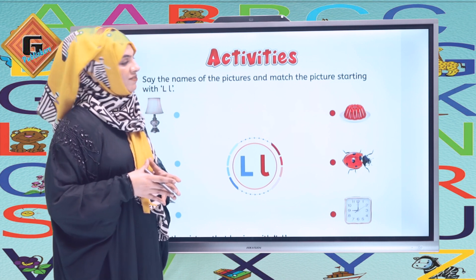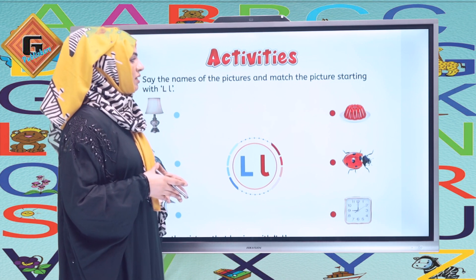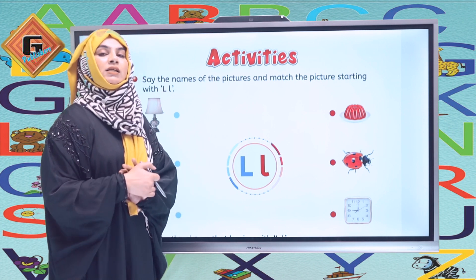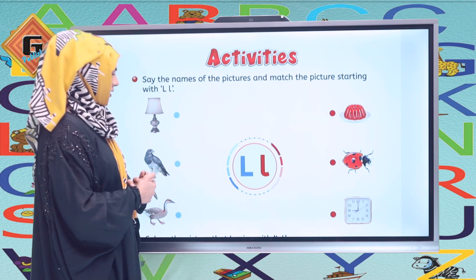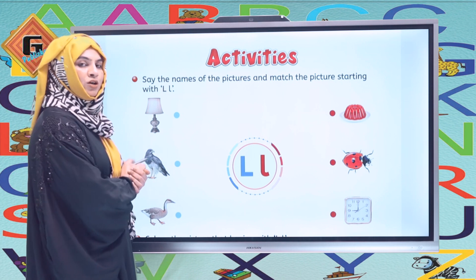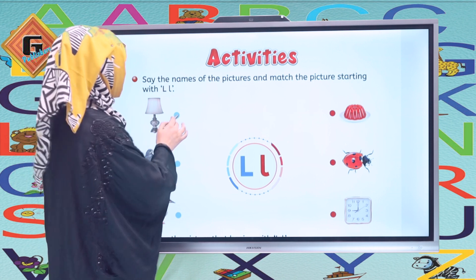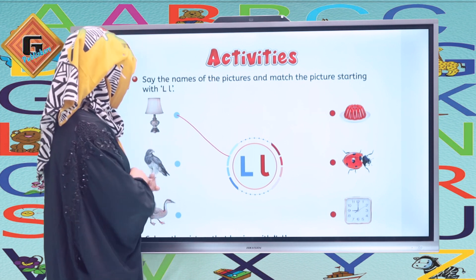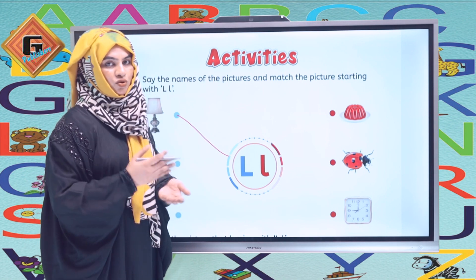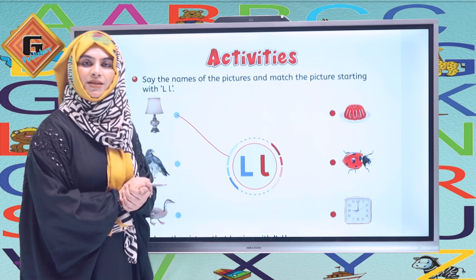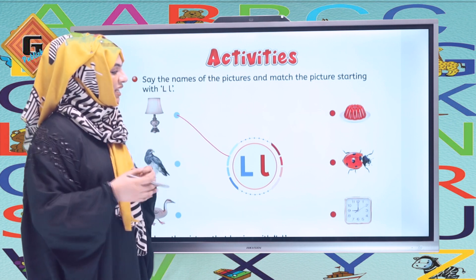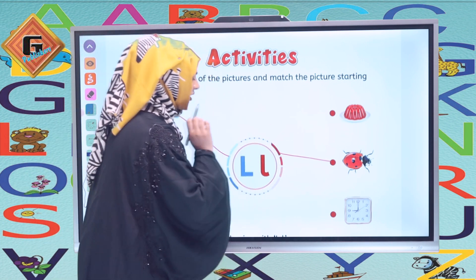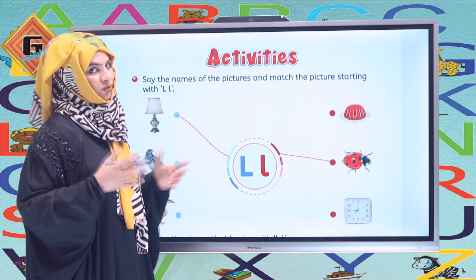This is page number 39 and we have some activities. The first one is: say the names of the pictures and match the picture starting with letter L. You have some pictures on both sides and letter L is in the center. Let's see what starts from L. The first one is lamp — the beginning sound is L, so we match it with L. The next one is coil — the beginning sound is not L, so we will not match it. The next one is duck — starting with D sound, so it's not to match. On the other side, the first picture is jelly — J, jelly, so we will not match it. The next one is ladybug — that means we have to match the ladybug. And the last one is clock — K, clock — we will not match the clock.